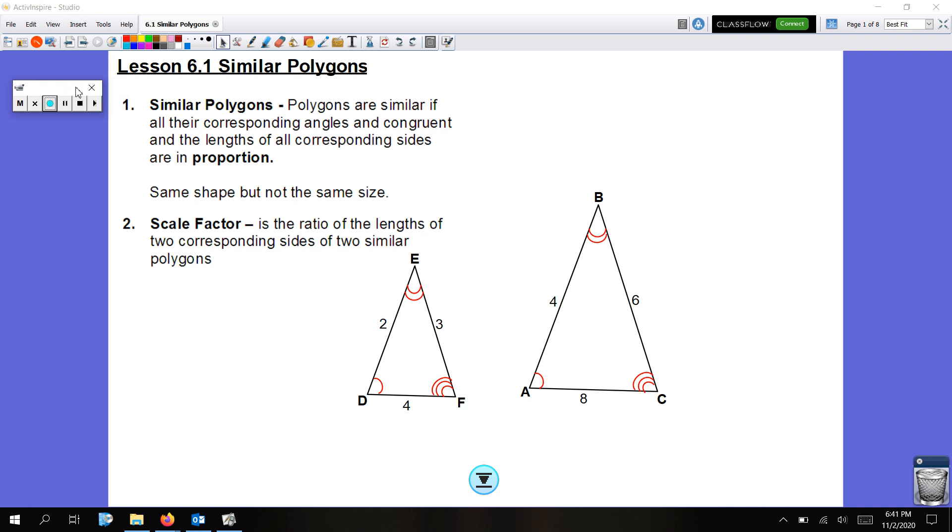All right, so today we're talking about Lesson 6.1, Similar Polygons. What is a similar polygon? Polygons are similar if all their corresponding angles are congruent and the lengths of all the corresponding sides are in proportion. So they have the same shape, but they're not the same size.